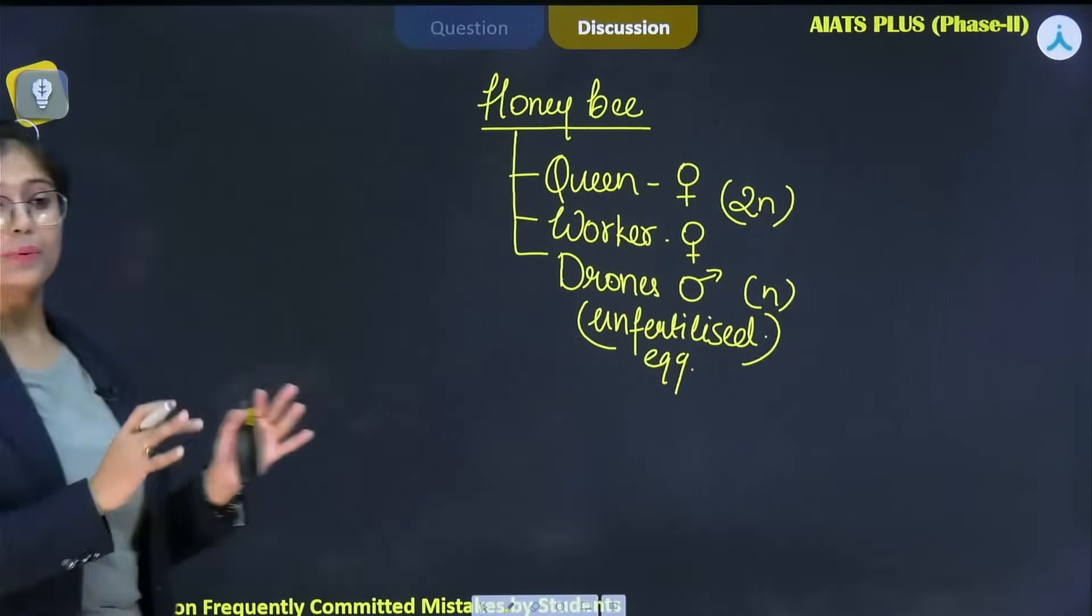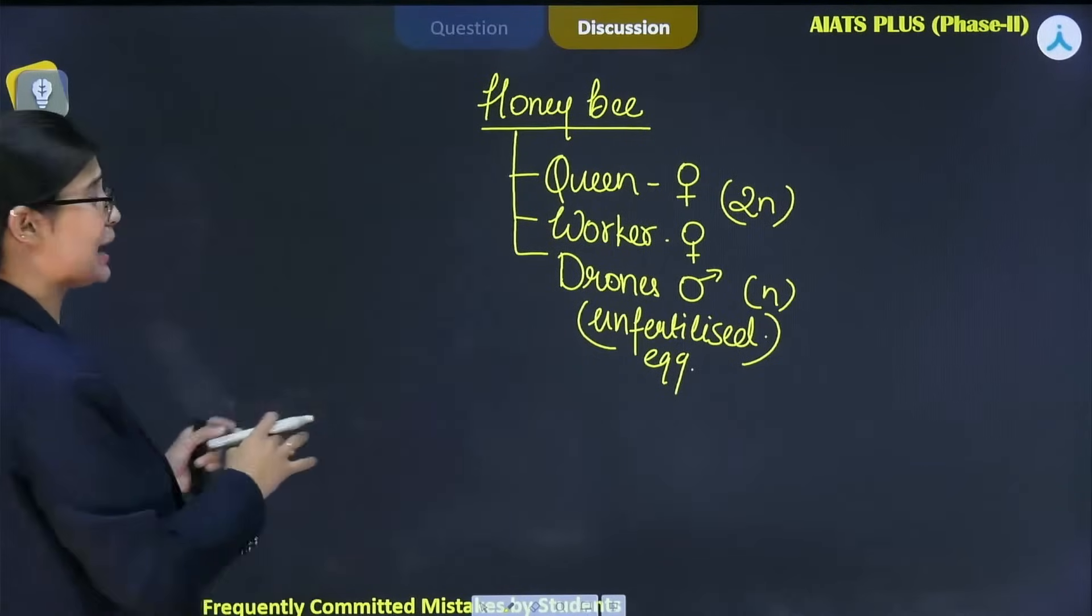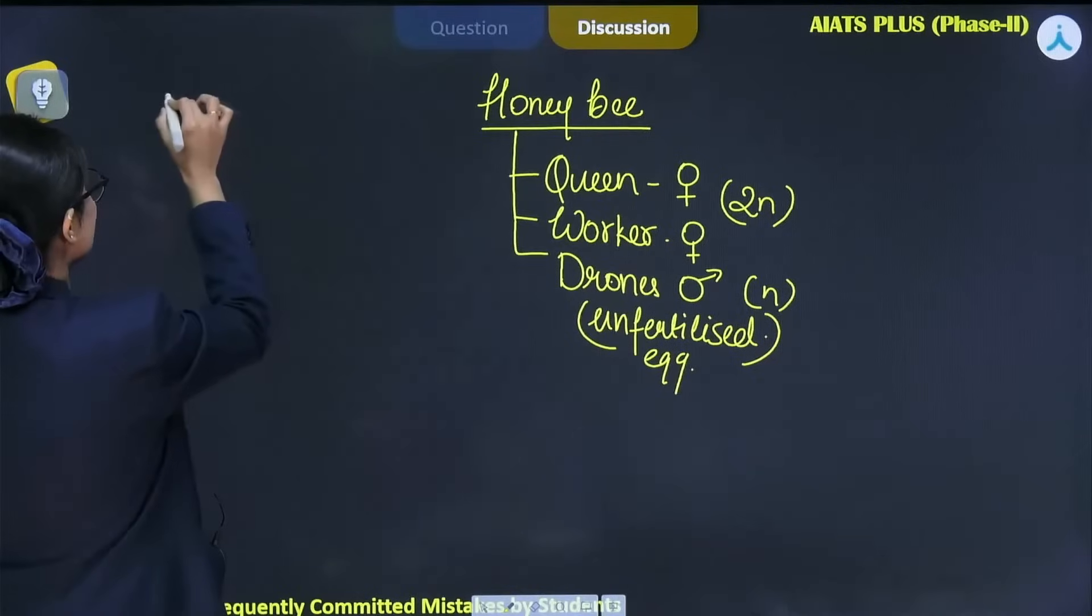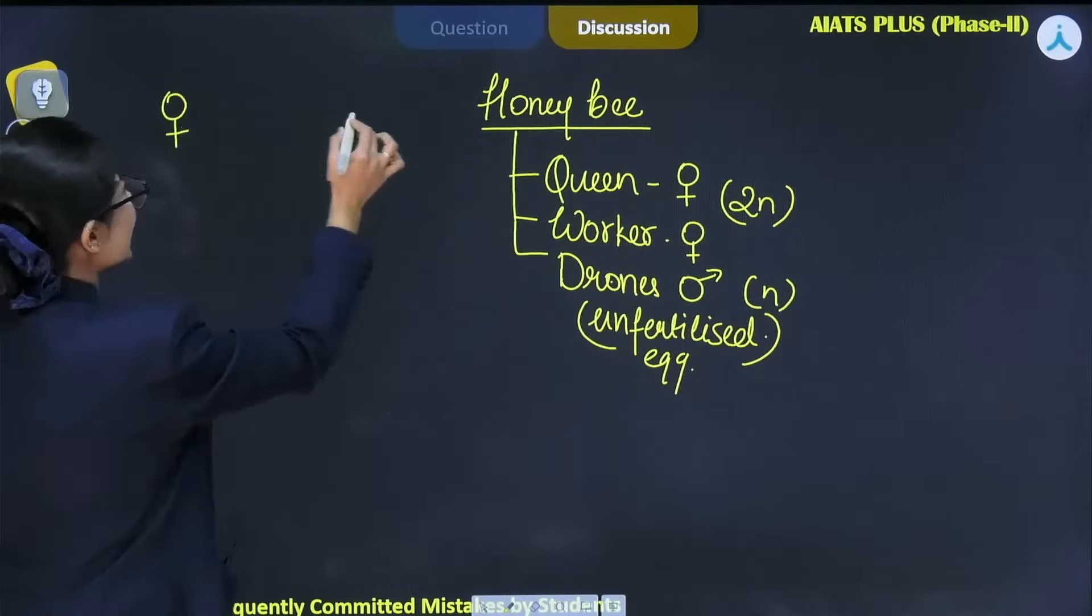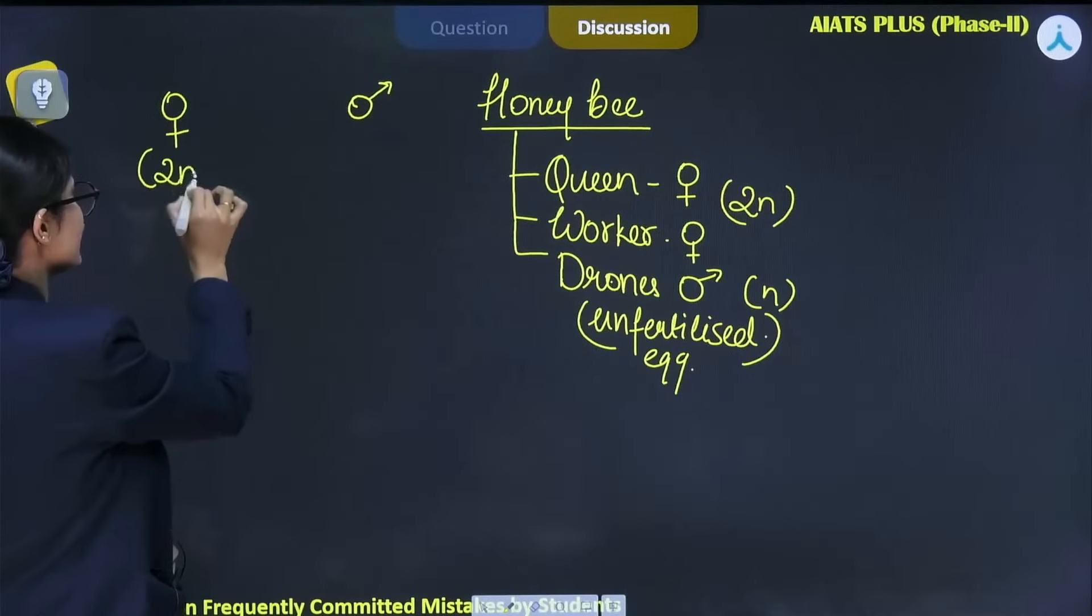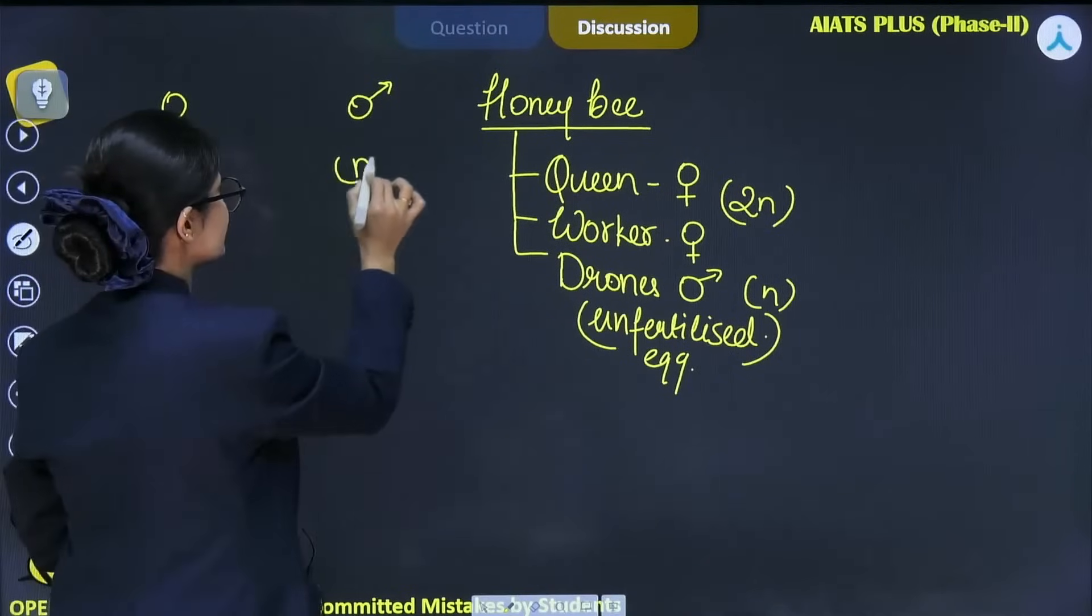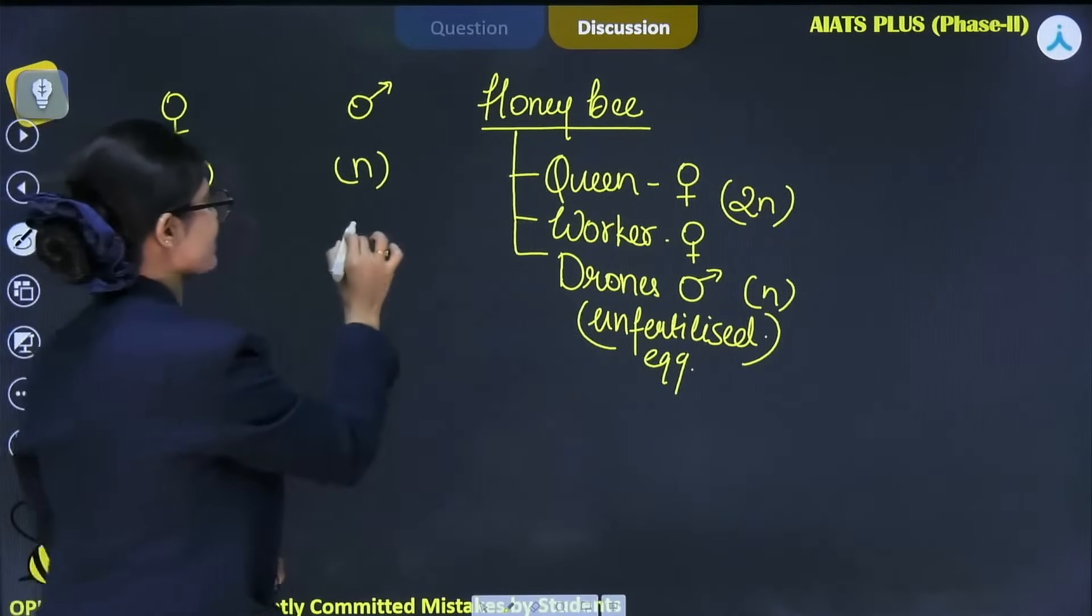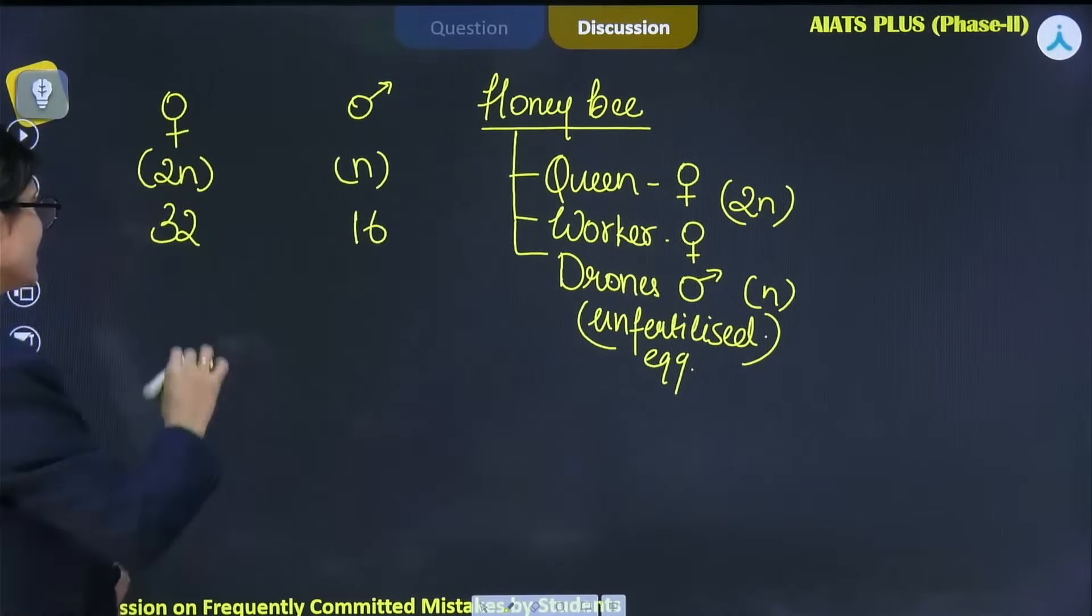Let's see how we can determine the sex in them. And what is the procedure for sex determination in honeybee? If we talk about females and males, as I've told you that they are diploid and they are haploid. They have 32 chromosomes. They have 16.